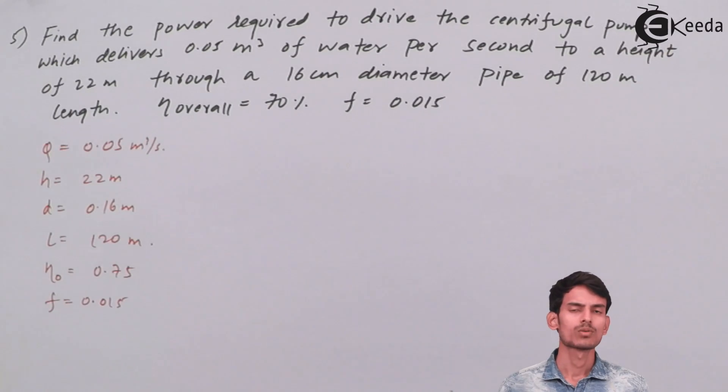As in the last question, let's first find the value of the velocity of the flow in the pipe. Once we get the velocity, we can get the value of head loss due to friction.